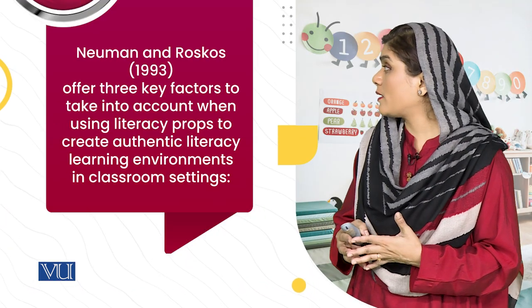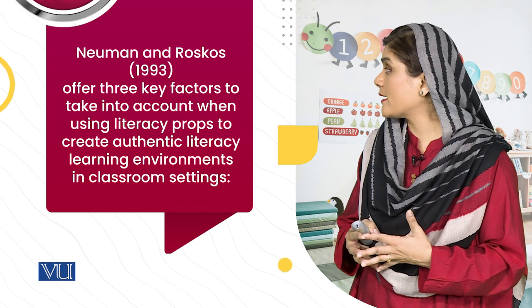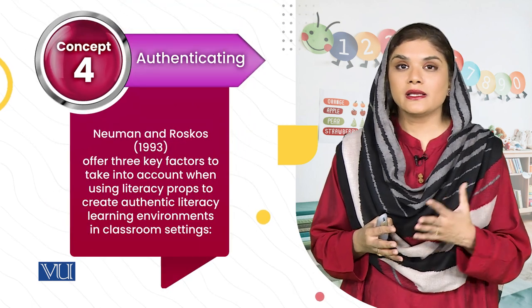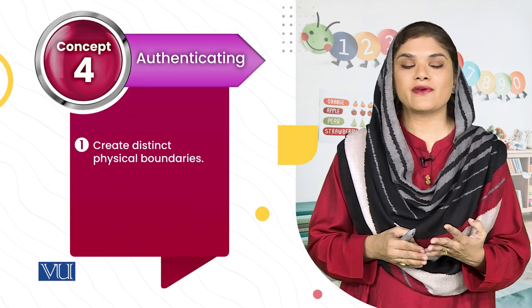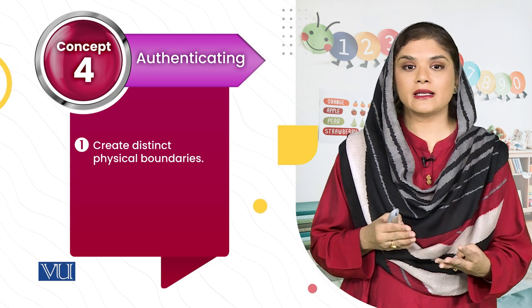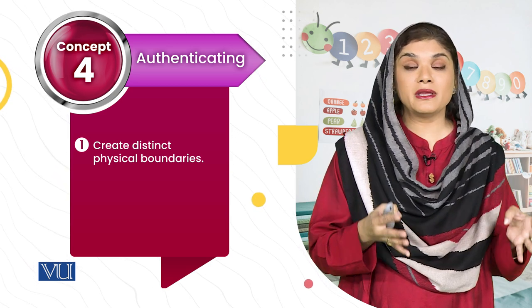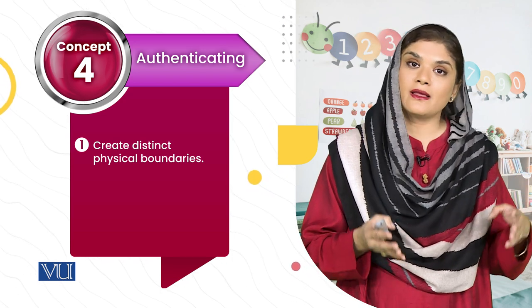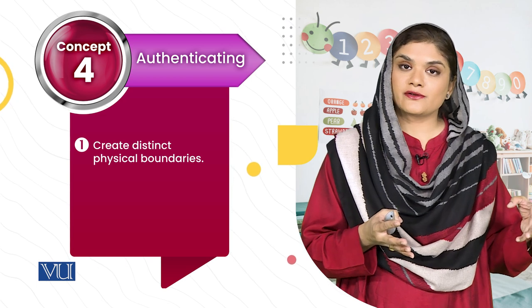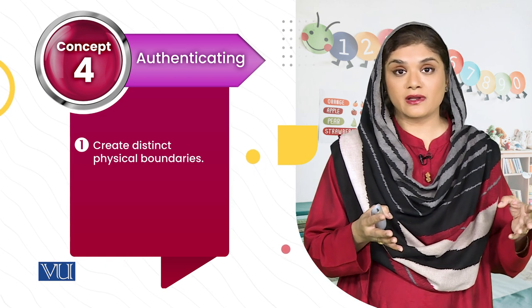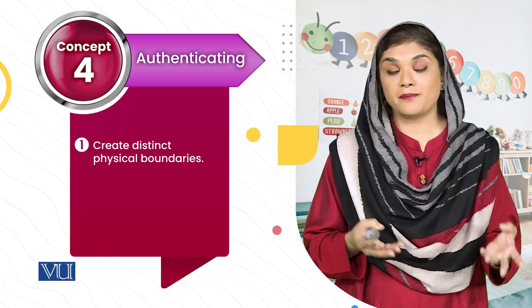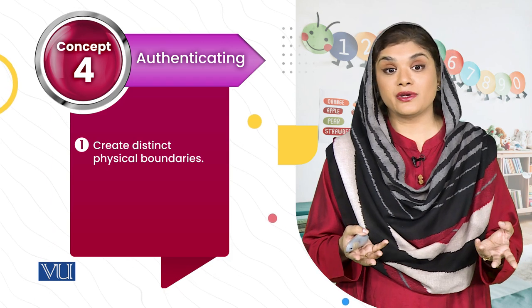Newman and Raqus have told us three factors that are important — factors that create an authentic learning environment in the classroom. The first factor is that you create a genuine environment with clear boundaries so that you can see the literacy corner or specific corner of the classroom — science, math, art, blocks, or a library corner.